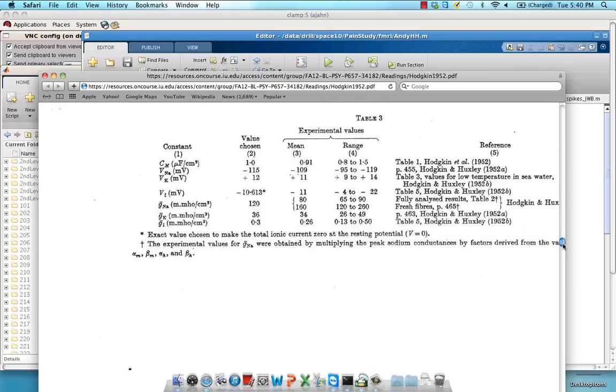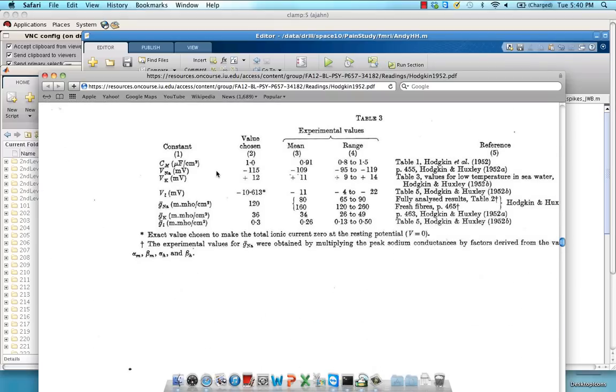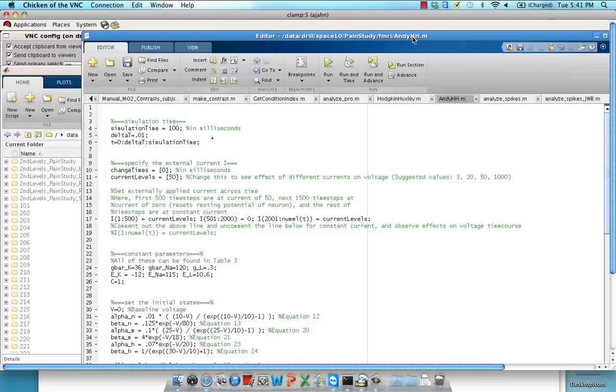Similarly, they've already calculated a lot of constants for us. Things like the capacitance of the membrane, the voltage equilibrium potentials of different ions and the conductances of different ions. We're just going to take those values and insert them into our code like we've seen right here.